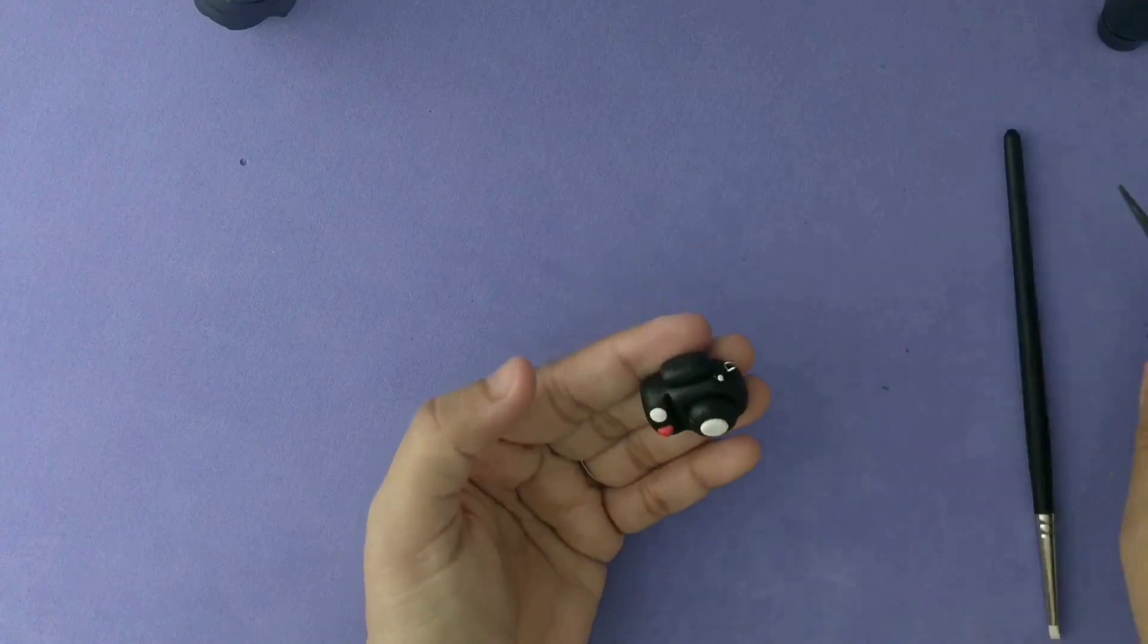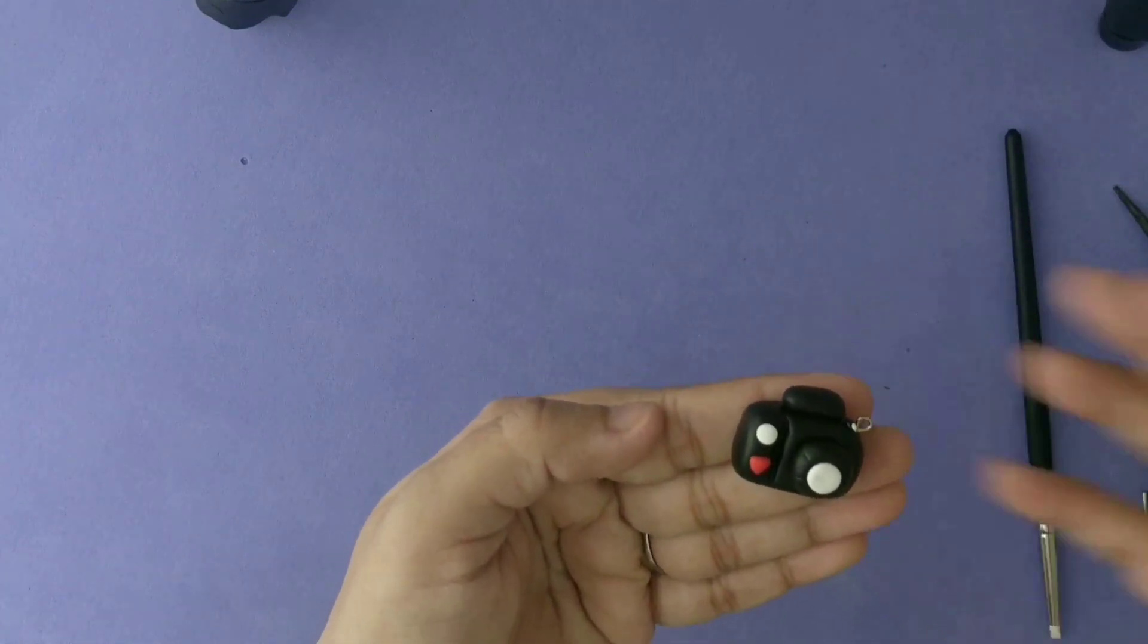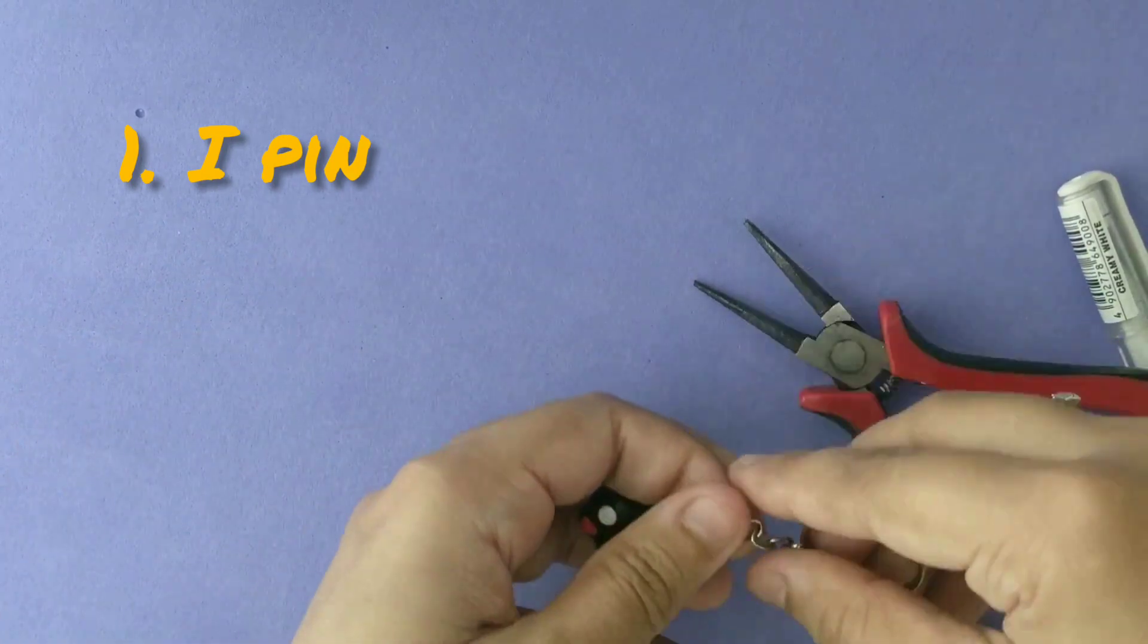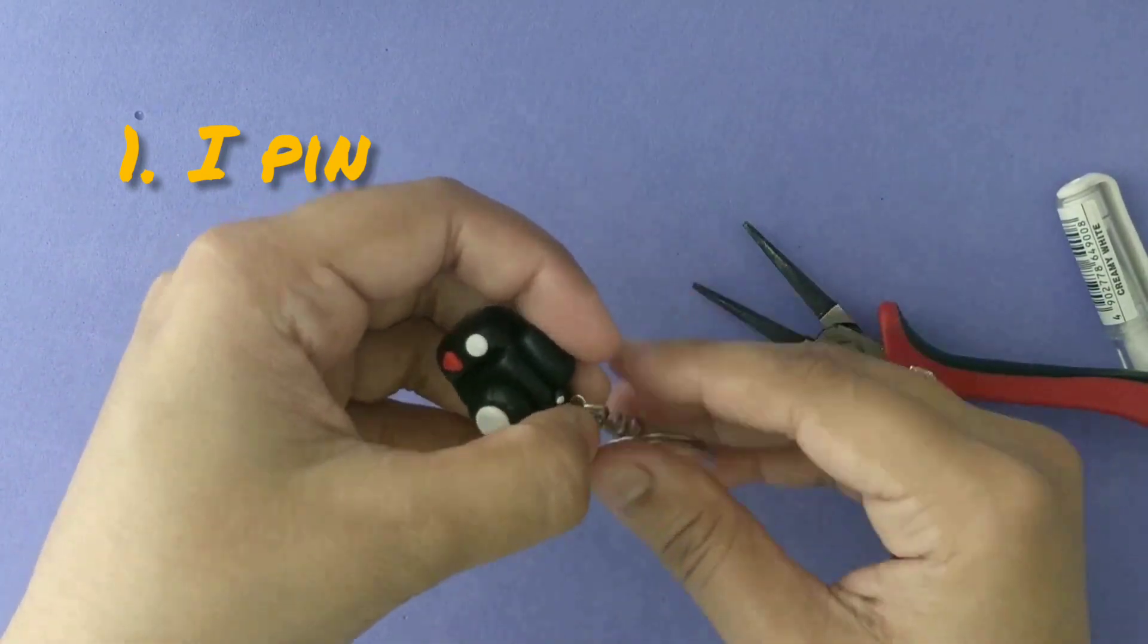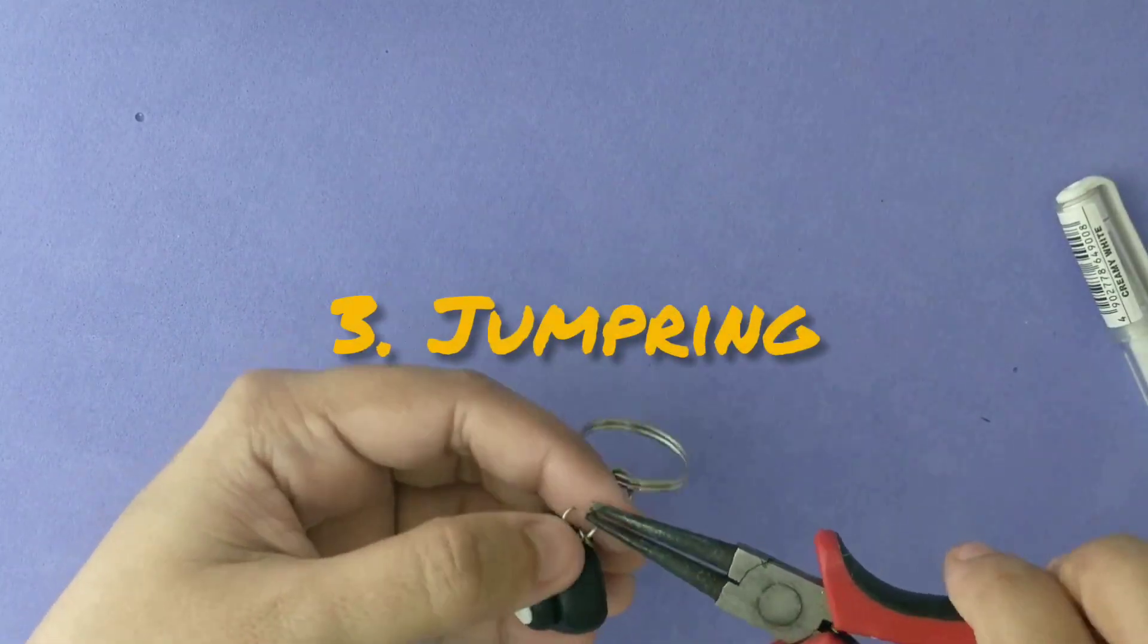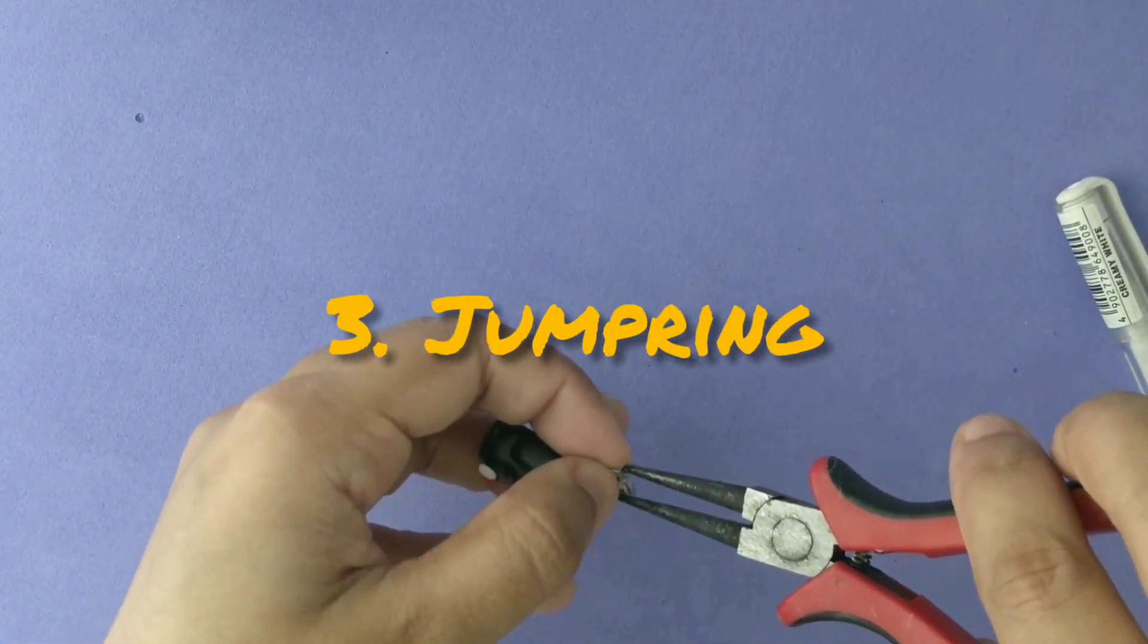We need three things for the keychain setup. First is our eye pin which goes inside the keychain, like here inside the camera. Second one is our key ring, and the third one is the jump ring which attaches both the other parts.